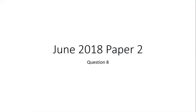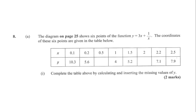Welcome back. Today we're working on question eight from the June 2018 Mathematics Paper Two. The question shows six points of the function y = 3x + 1/x, with coordinates given in a table. They give us six coordinates with corresponding y-values, and we are to find the missing two y-values, which correspond to x = 0.5 and x = 2.